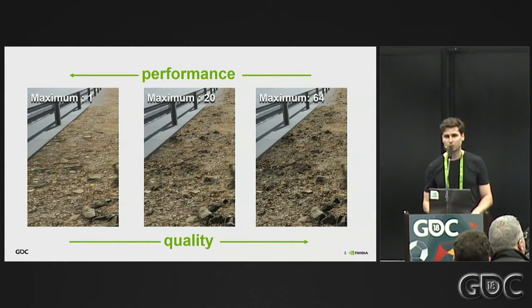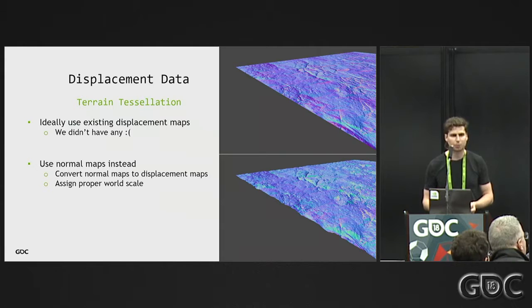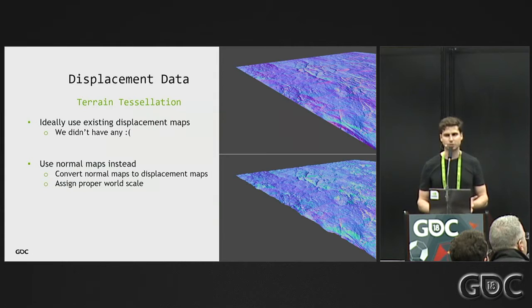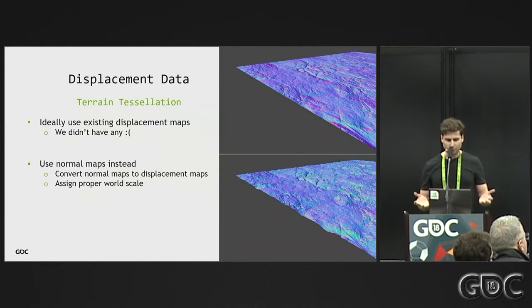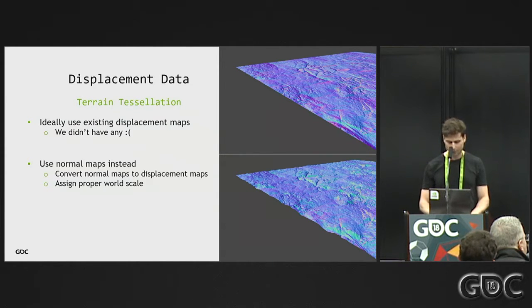Once you have tessellation in place, you need to do something with displacement. Ideally, you should have displacement maps provided by your artists, but because of different pipelines and middleware, this is not always the case — and this was the exact problem for us, we didn't have any. What we did is take the existing normal maps, which are commonly present in most games for bump mapping, and converted those normal maps offline to produce displacement maps. All you need to do is assign proper scaling once you have this displacement map, and you get accurate displacement mapping from your normal maps.